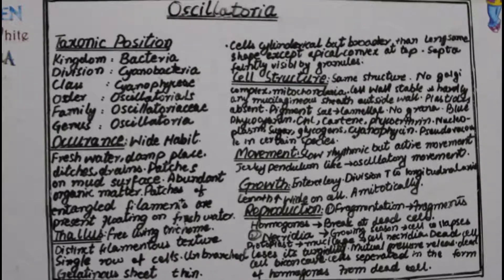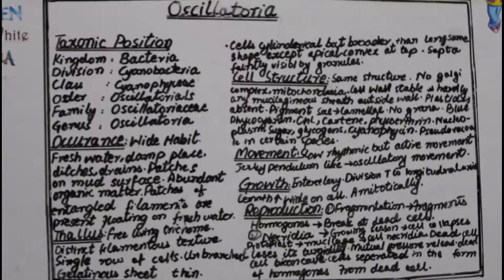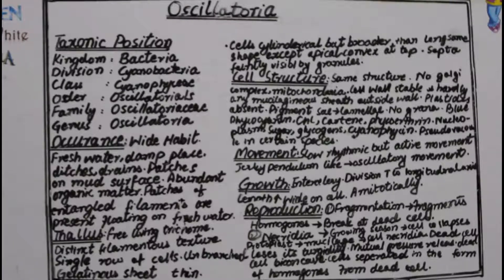Next is the thallus. The thallus is the plant body that cannot be differentiated into root, stem, and leaf — it applies to lower plants and lower organisms including prokaryotes. The thallus of Oscillatoria is a free-living trichome. A trichome is a row of cells or a chain of cells in filament form, and it has a distinct filamentous texture.